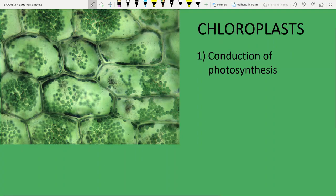Chloroplasts conduct photosynthesis during which light energy is captured and converted into chemical energy, and this happens due to the special pigment chlorophyll.